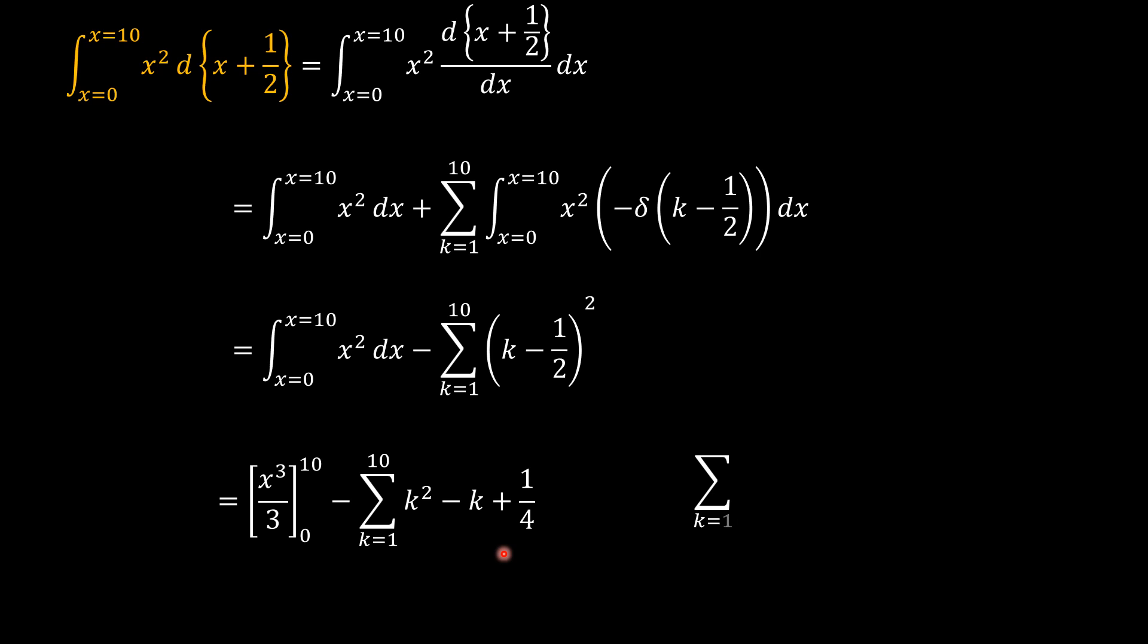The important thing is we can now use our summation formulas. When you have k squared sum from k equals 1 to n, that is the same as n times n plus 1 times 2n plus 1 over 6. With this k here, when we sum it from k equals 1 to n, it's the same as n times n plus 1 over 2. We're going to use these formulas to plug into these, and knowing that n in this case is 10, we'll be able to obtain our answer.